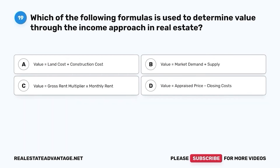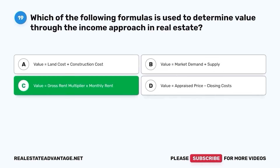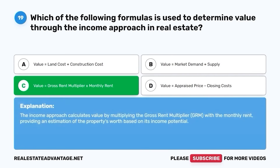Question 19. Which of the following formulas is used to determine value through the income approach in real estate? A. Value equals land cost plus construction cost. B. Value equals market demand plus supply. C. Value equals gross rent multiplier times monthly rent. D. Value equals appraised price minus closing costs. The correct answer is C. The income approach calculates value by multiplying the gross rent multiplier (GRM) with the monthly rent, providing an estimation of the property's worth based on its income potential.